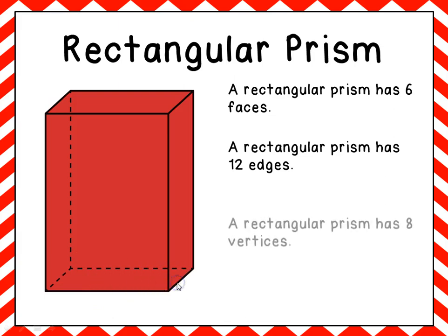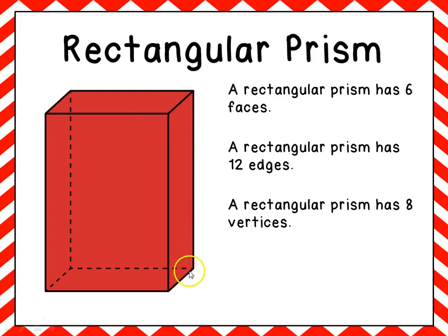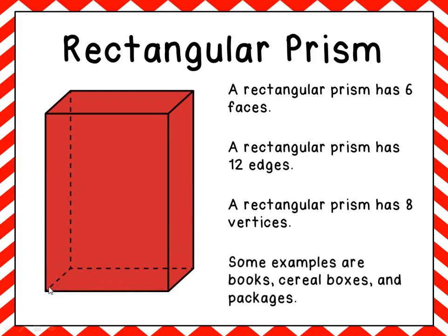A rectangular prism has eight vertices — eight places where the edges meet up. Some examples of a rectangular prism are books, cereal boxes, and some packages.